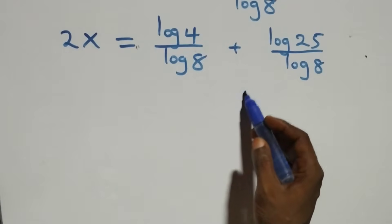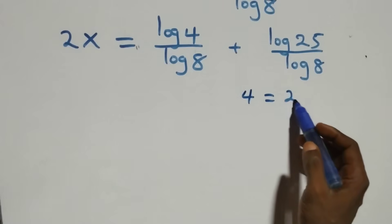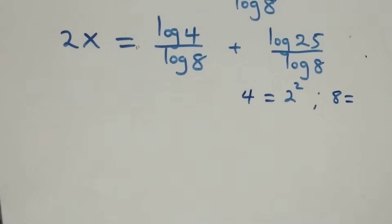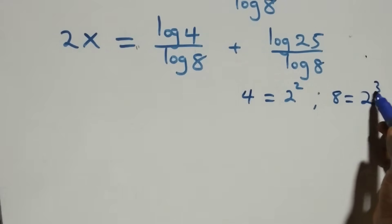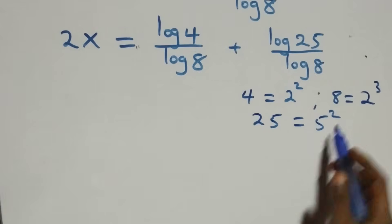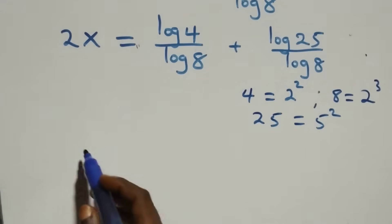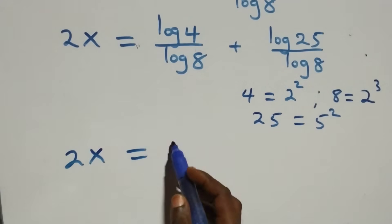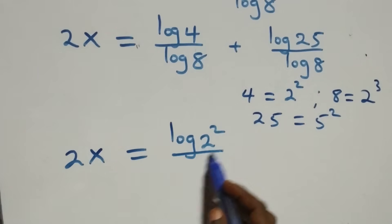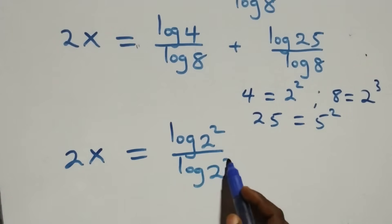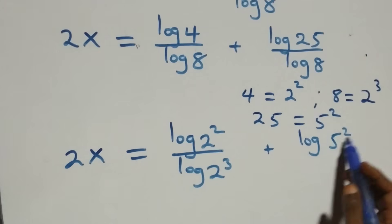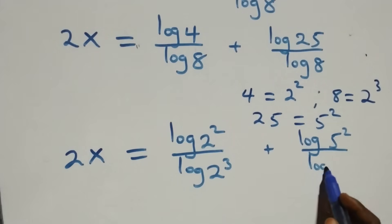From here we express 4 as 2 times 2, which is 2 squared. Also, 8 is the same as 2 times 2 times 2, which is 2 raised to power 3. And 25 can be expressed as 5 times 5, which is 5 squared. So what we have becomes 2x equals log 2 squared over log 2 raised to power 3, plus log 5 squared over log 2 raised to power 3.